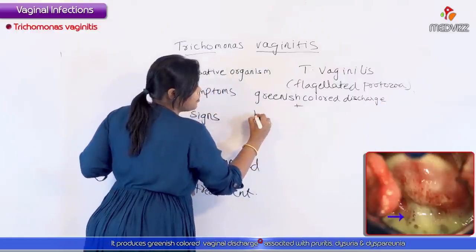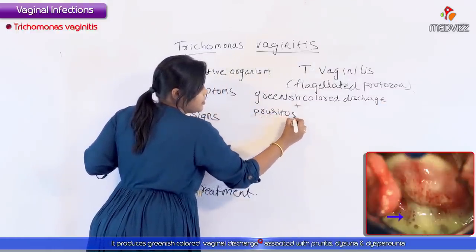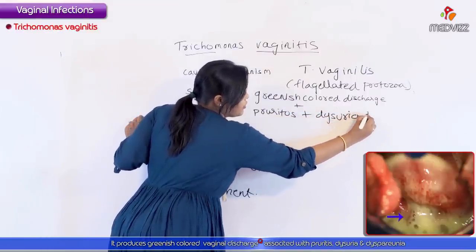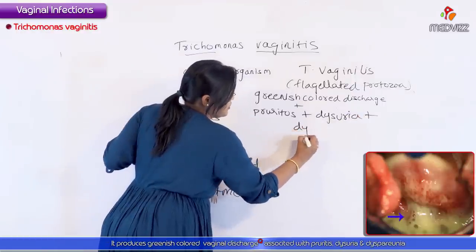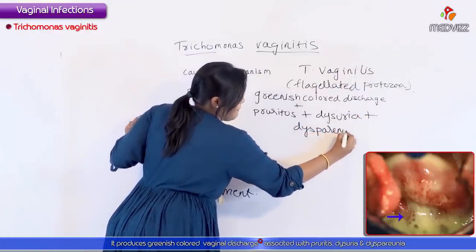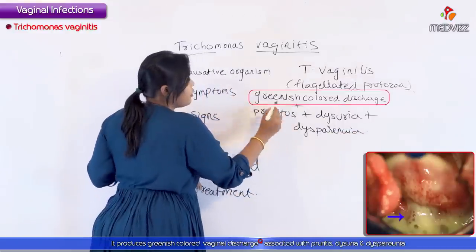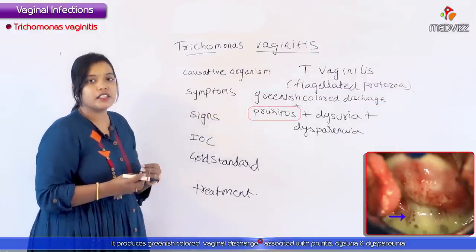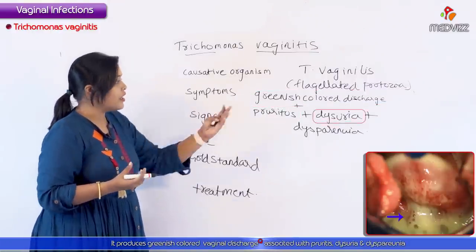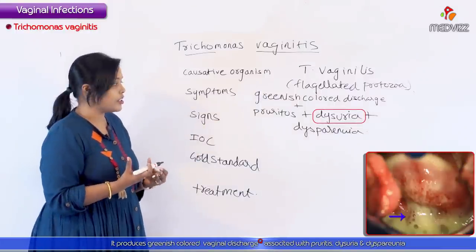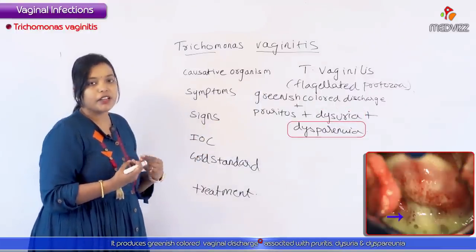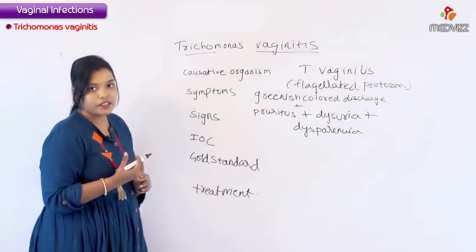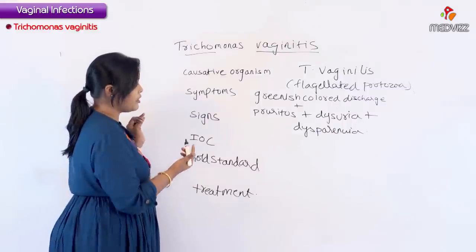The discharge is associated with pruritus, urinary symptoms like dysuria, and dyspareunia. The characteristic of the discharge is greenish color, associated with itching in the genital region, along with painful micturition and dyspareunia, which is painful coitus. These are the symptoms produced by trichomonas vaginitis.